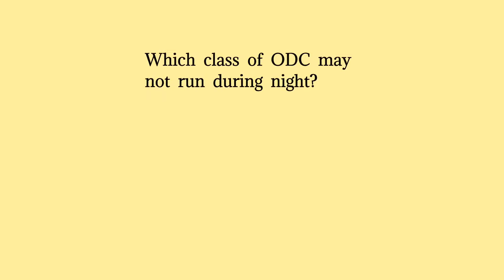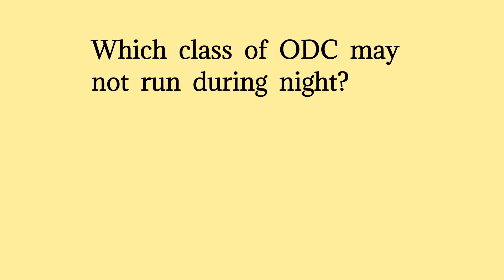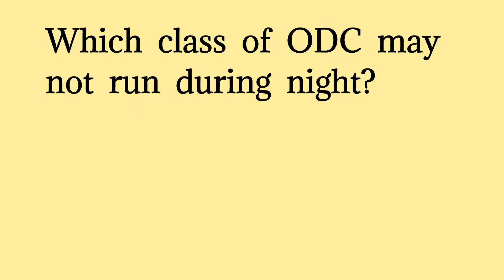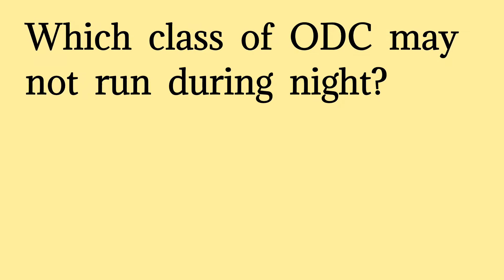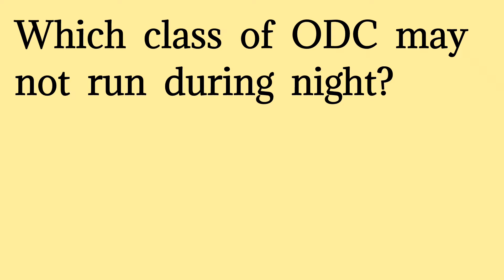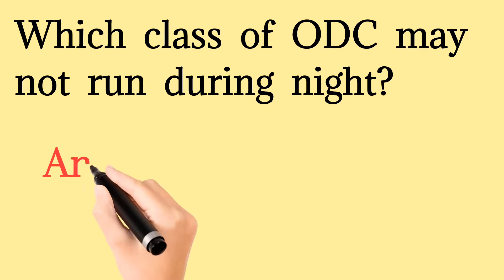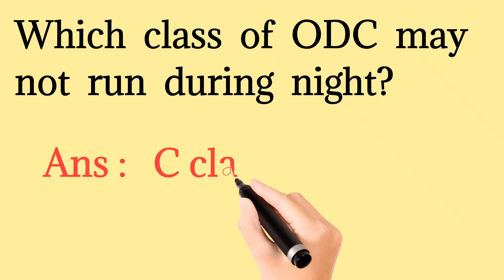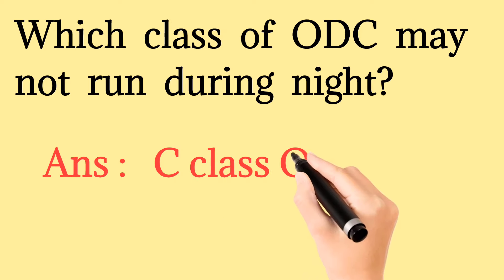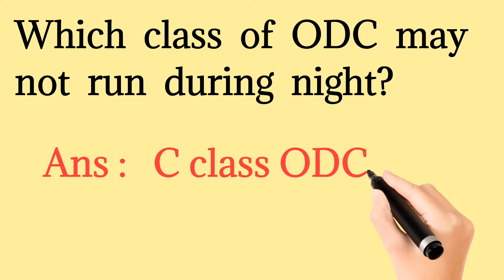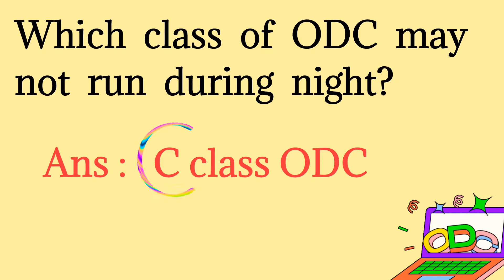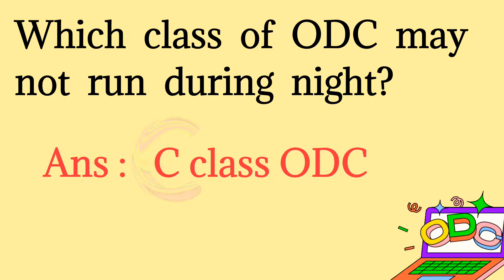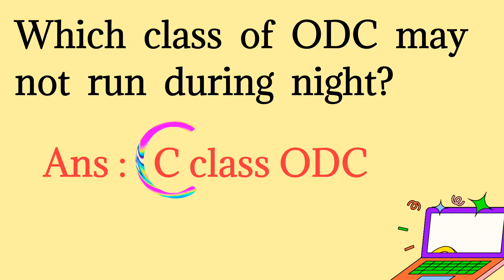Next question: Which class of ODC may not run during night? There are three classes of ODC: A, B, and C. The C class has less gap between the obstruction and the train. So C class is normally not permitted during night due to that less gap — it is one of the most dangerous classes. CRS approval is required, and after approval it will run during daytime only.